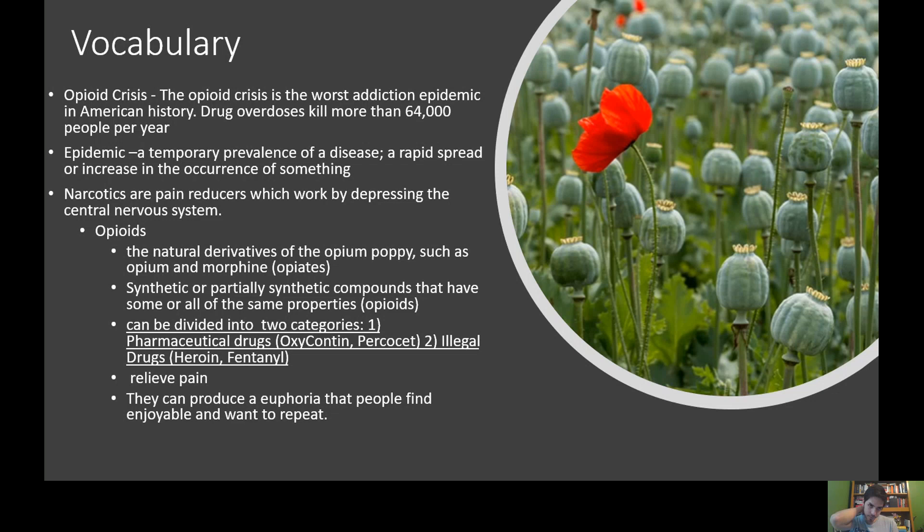Here's some vocabulary you need for understanding the opioid epidemic. The opioid crisis, if you see that in newspaper publications or on the news, refers to the worst addiction epidemic in American history so far — about 64,000 people died from opioids in 2016.